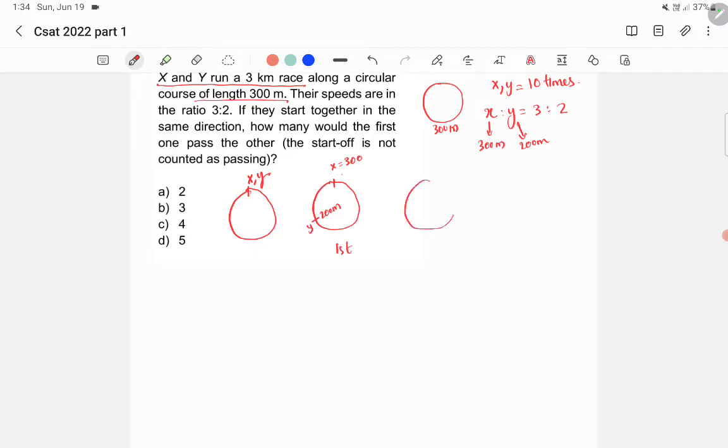Now in the second round, X completes 600 meters, so X is again here. X will complete one more round, so it will be 600 meters. Y will be completing only 400 meters, so Y is somewhere here at 400 meters.